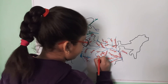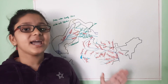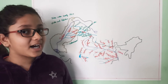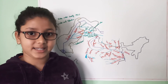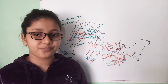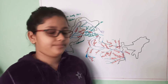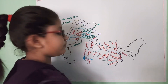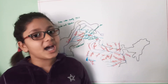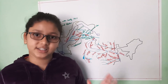Then comes the Bansagar project, which is a joint project of Uttar Pradesh, Madhya Pradesh, and Bihar. Then comes the Matatila project, which is a joint project of Uttar Pradesh and Madhya Pradesh.